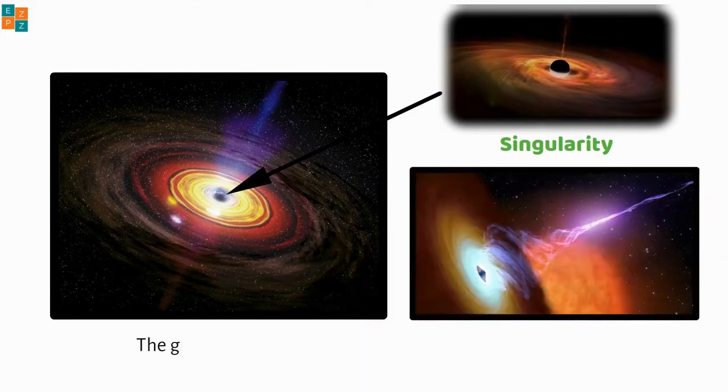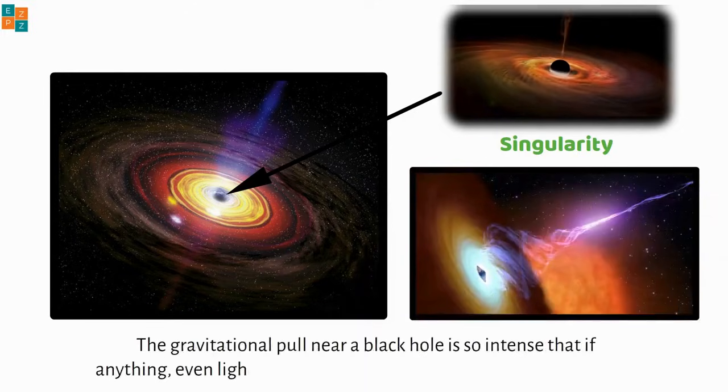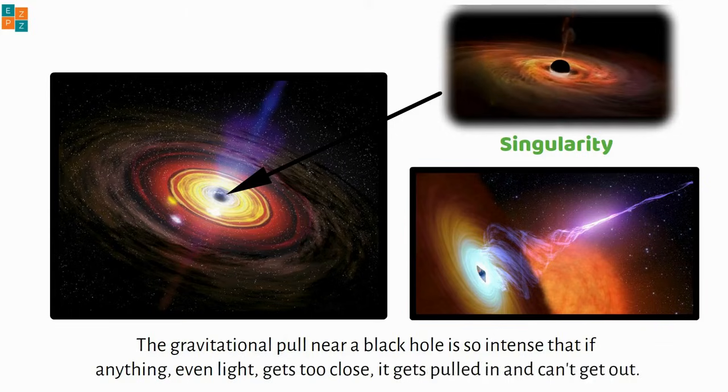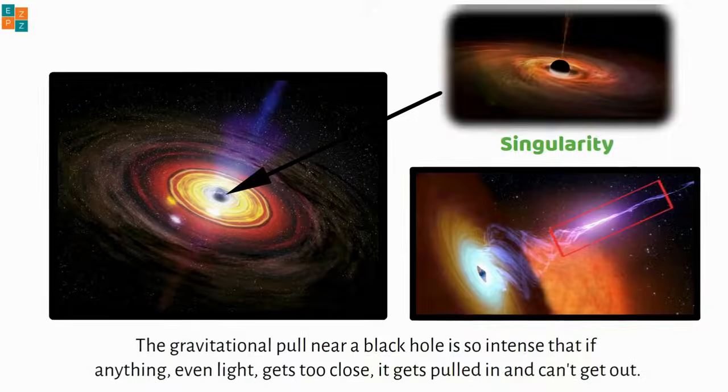The gravitational pull near a black hole is so intense that if anything, even light, gets too close, it gets pulled in and can't get out. That's why we call it a black hole, because even light can't escape to tell us what's inside.